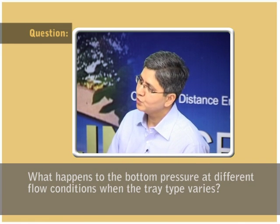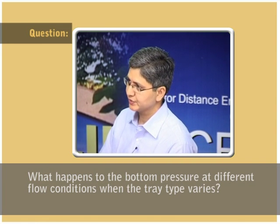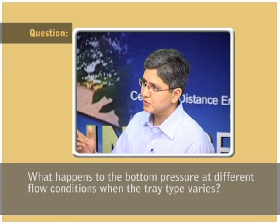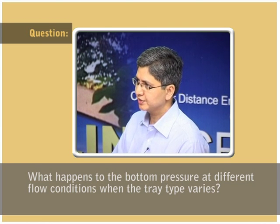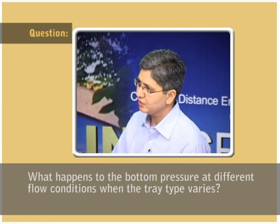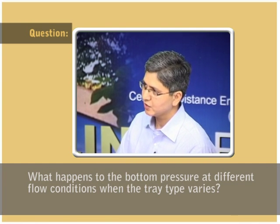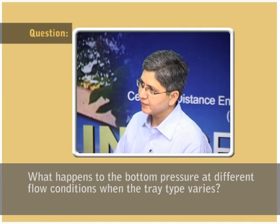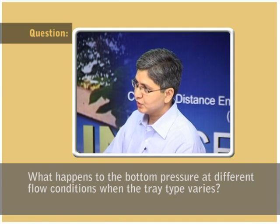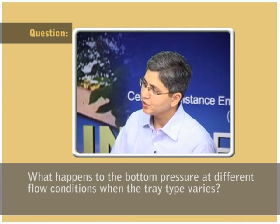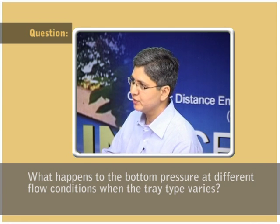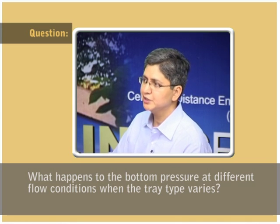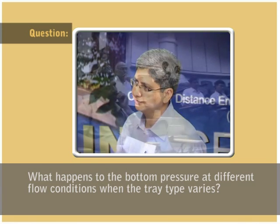Regarding pressure in the column: if the top pressure is controlled, the bottom pressure will change depending on vapor load. At lower vapor loads pressure drop is lesser and at higher vapor loads it is higher. The bottom pressure will change if you are maintaining the top operating pressure.